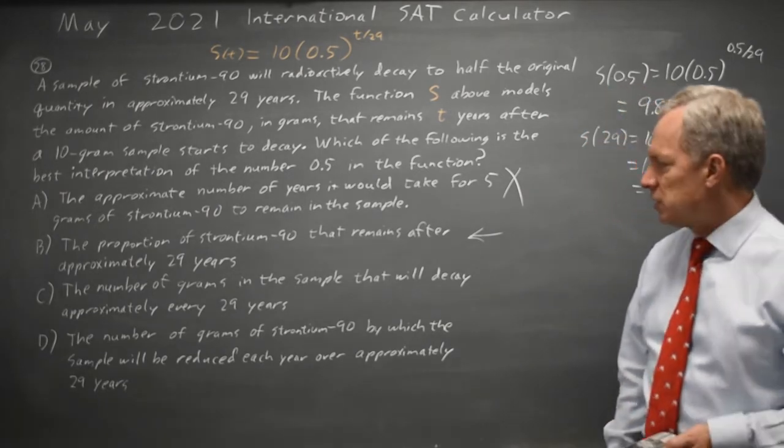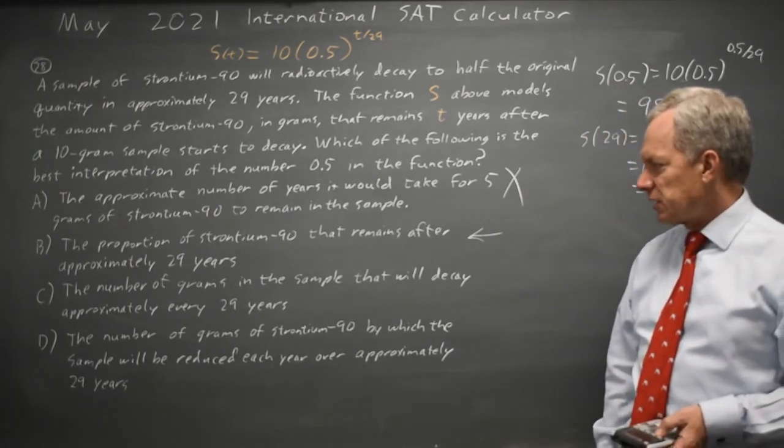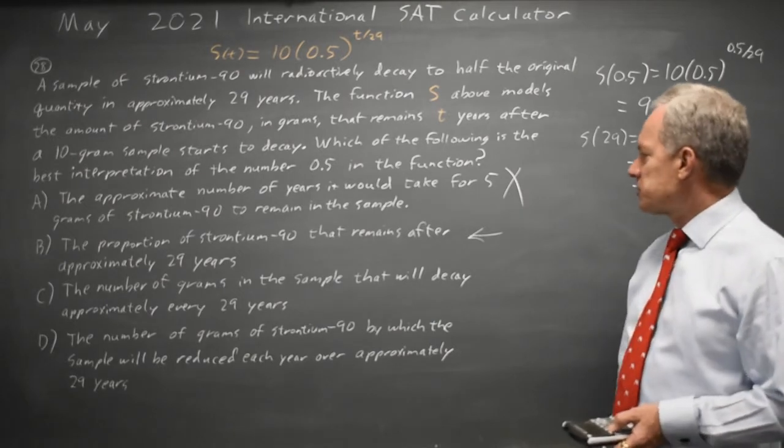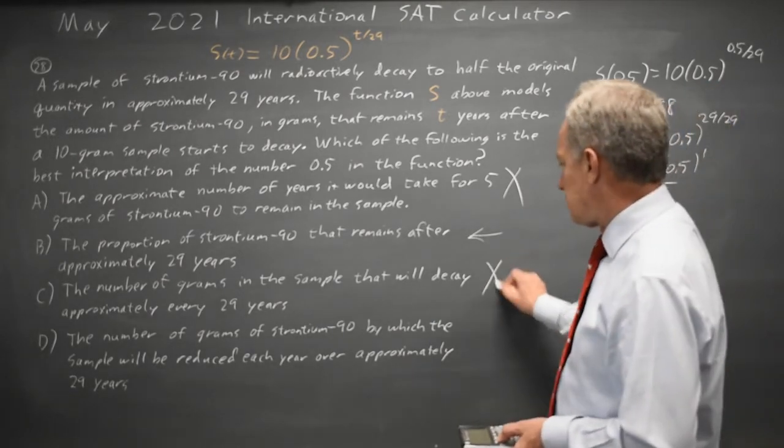Let's check the other two. Choice C: the number of grams that decay every 29 years. We just saw after 29 years, 5 grams decay, not 0.5, so that is not correct.